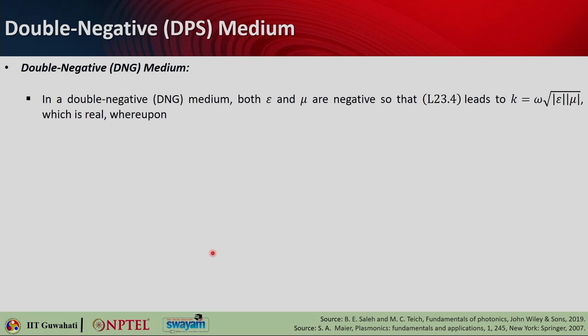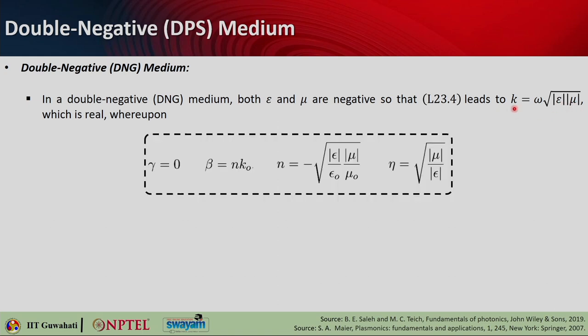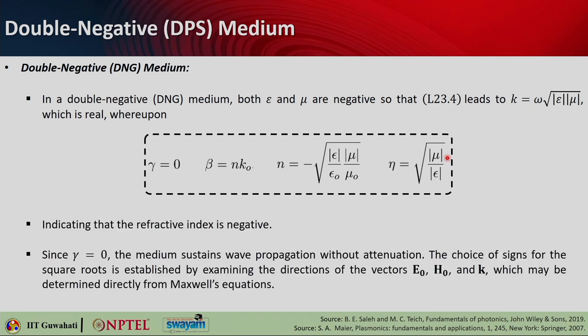Moving to the double negative medium, both epsilon and mu are negative. Since we take their moduli, k = ω√(|ε||μ|) is real — so wave propagation is possible, with γ = 0 and β = n·k_0. The refractive index is n = -√(|ε/ε_0| · |μ/μ_0|), giving a negative refractive index. The impedance is √(|μ|/|ε|), which is positive and real.